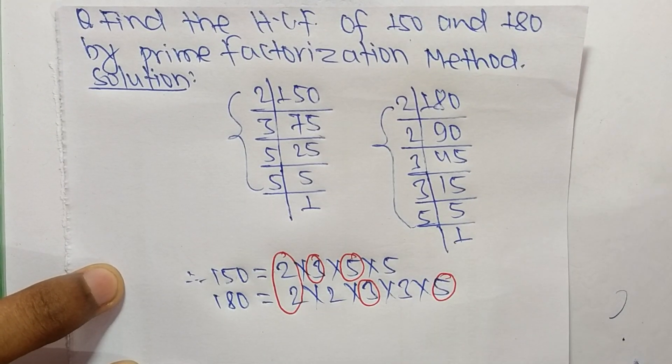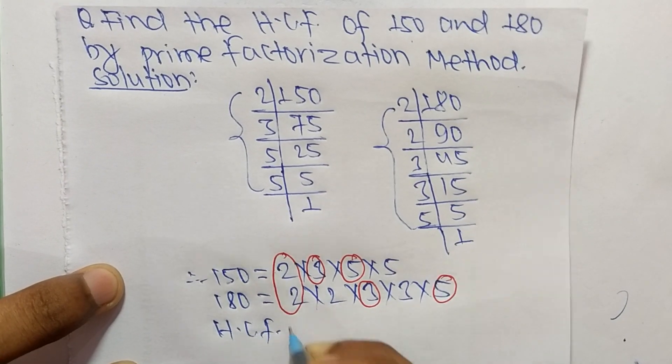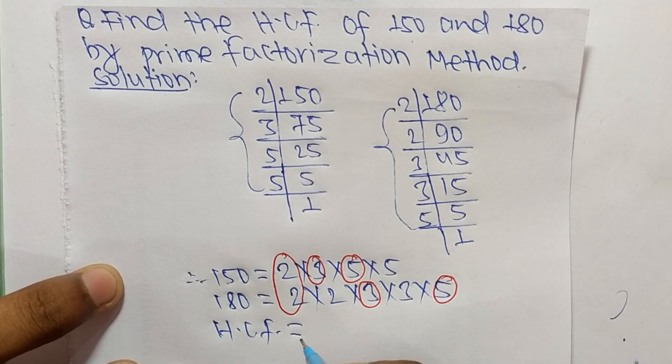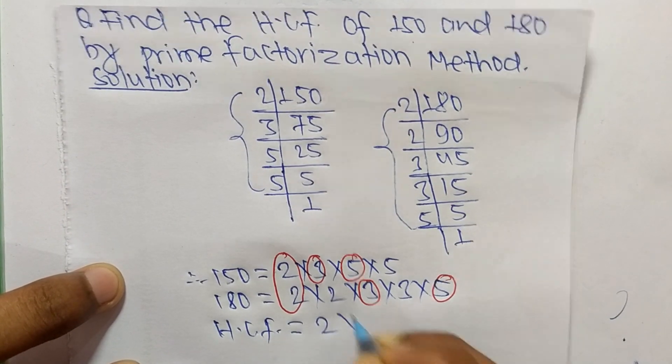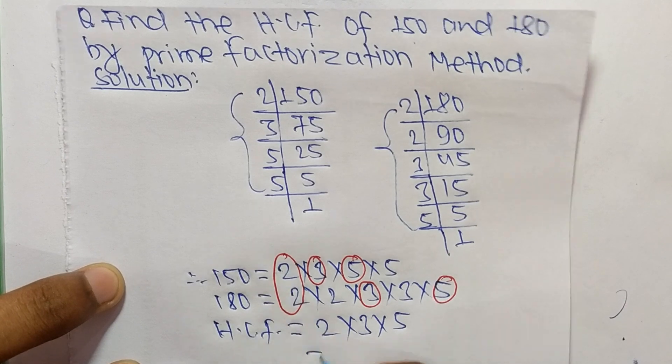The HCF equals the product of common factors. We have 2, 3, and 5, so it is 2 times 3 equals 6, and 6 times 5 equals 30.